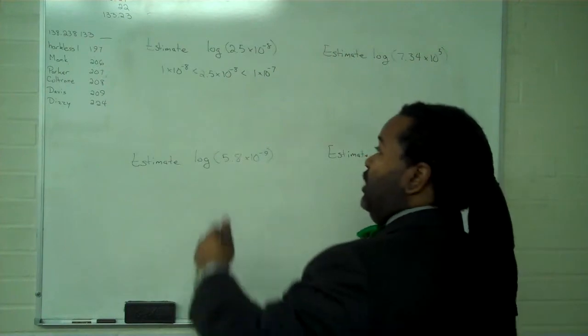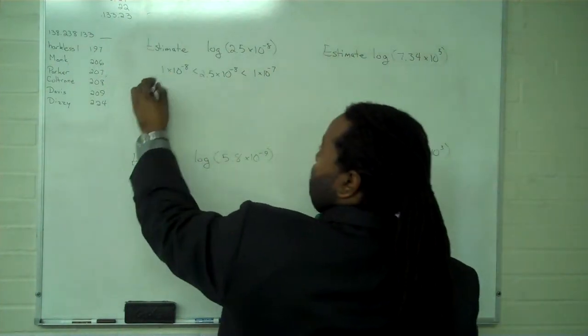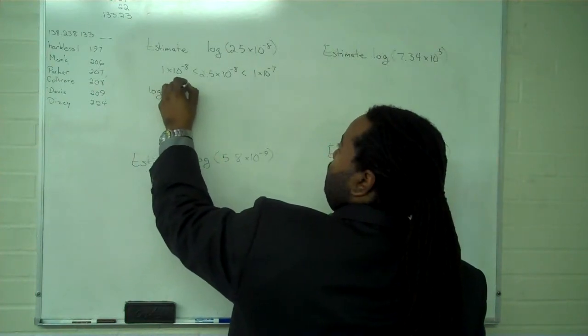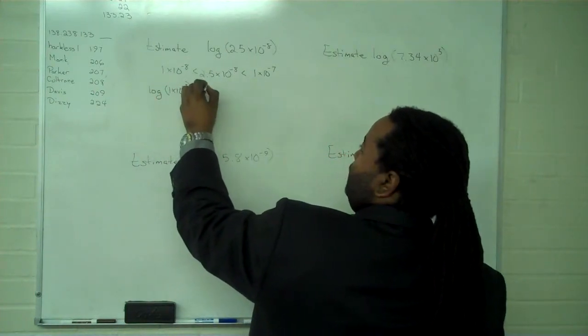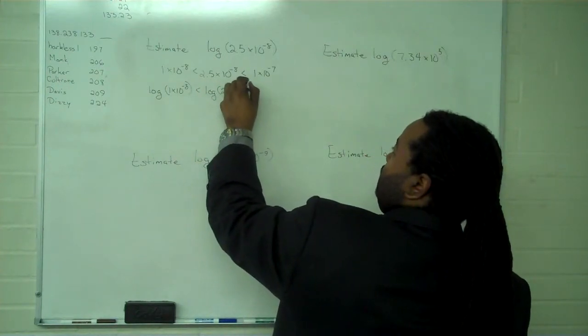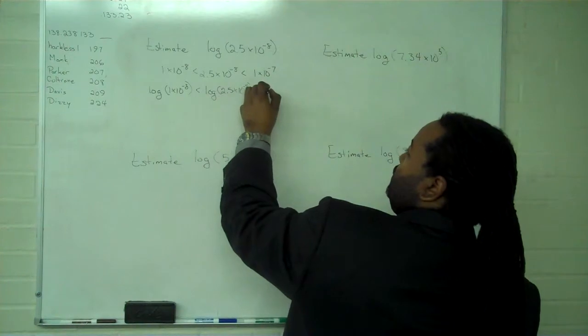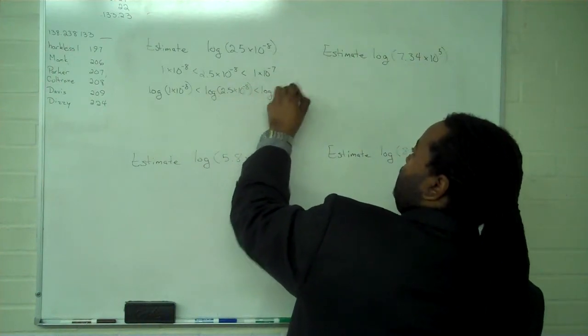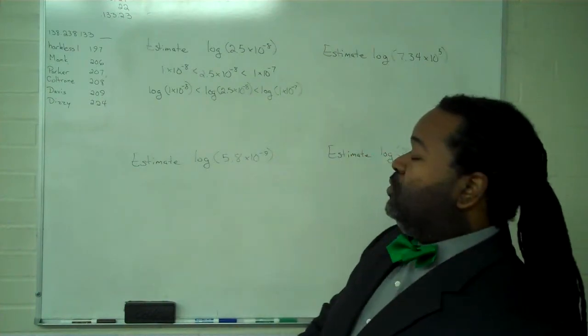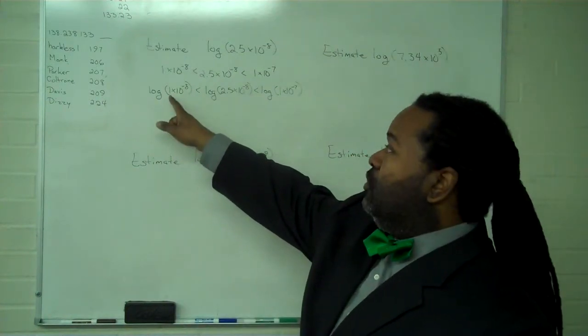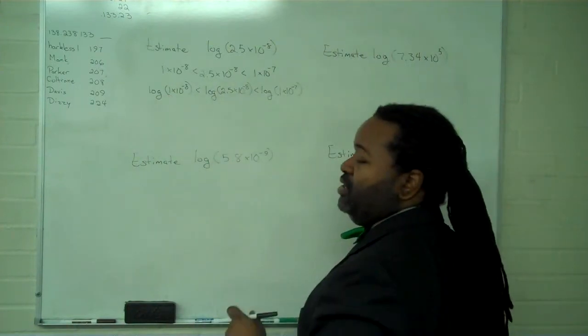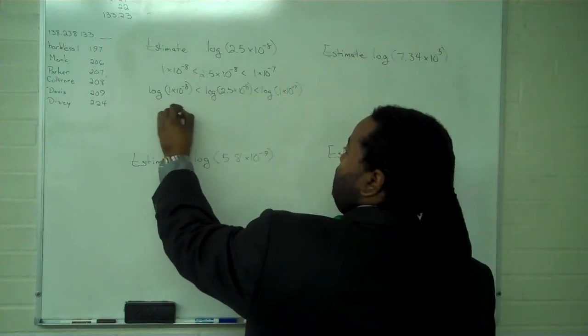We can take the logarithm of everything, and this will respect the inequalities. So log of 1 times 10 to the minus 8 is less than the log of 2.5 times 10 to the minus 8, which is itself less than the log of 1 times 10 to the negative 7. The next thing we note is that by the multiplication rule, we'll be doing a sum here. Log of 1 is just 0, so we just need log of 10 to the negative 8, and that becomes negative 8 itself.